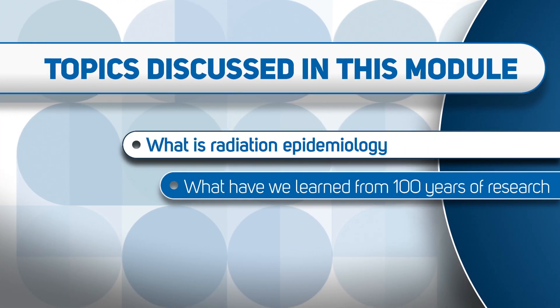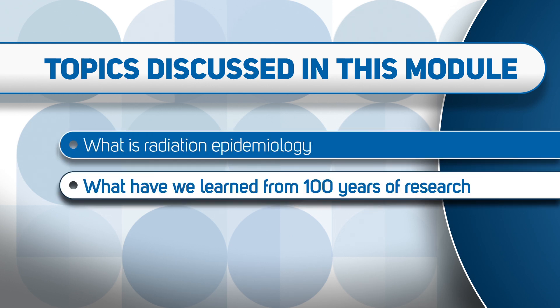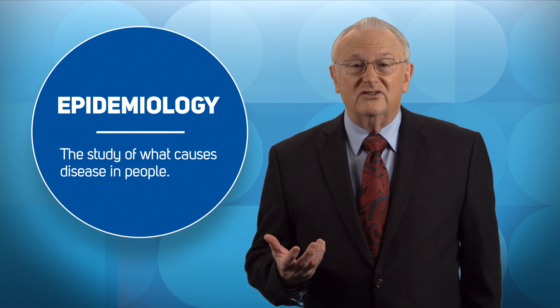In this module, we will discuss what is radiation epidemiology and what have we learned from 100 years of radiation epidemiology research. It would be good to start with some background information, so let's begin with a definition of epidemiology. It is simply the study of the distribution and causes of disease in human populations. It comes from the word epidemic — epi means upon, and demos means people — so it's the study of what causes disease in people.